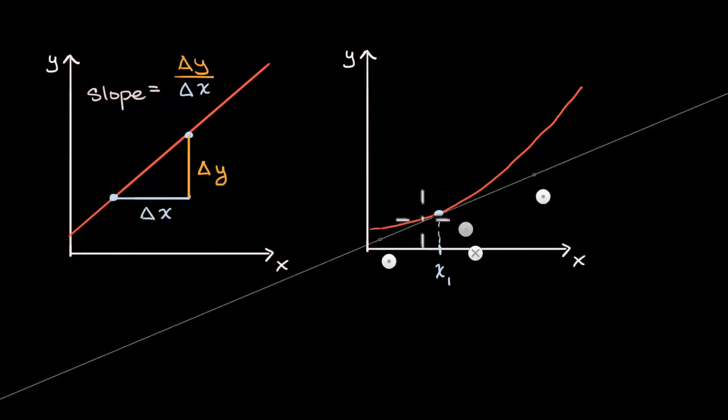So in this case, the tangent line might look something like that. If we know the slope of this, well then we could say that that's the instantaneous rate of change at that point.